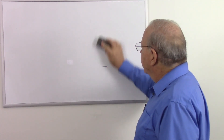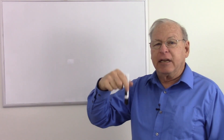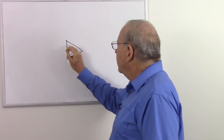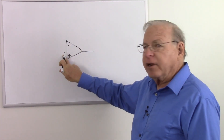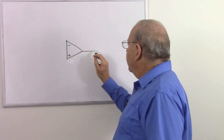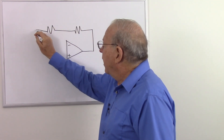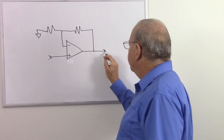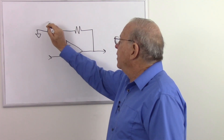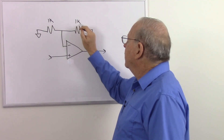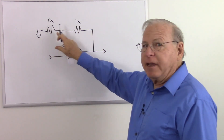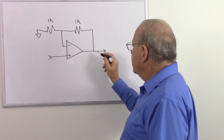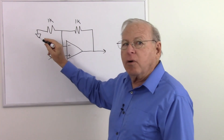To understand the integrator, we first have to revisit the op-amp current controller — I have a video about that linked in the description. Here is our operational amplifier. I always like to draw it with the inverting input on top and the non-inverting input on the bottom. It's essentially just a non-inverting amplifier. There's our input, there's our output, and let's make these resistors one kilohm each.